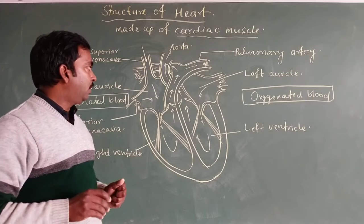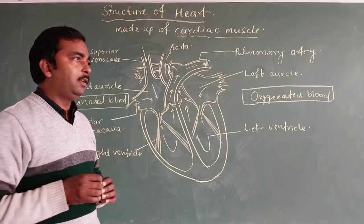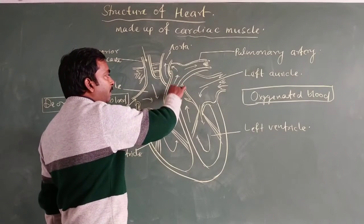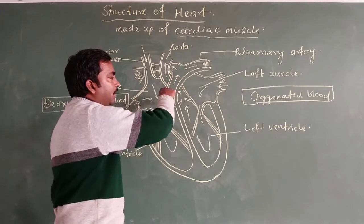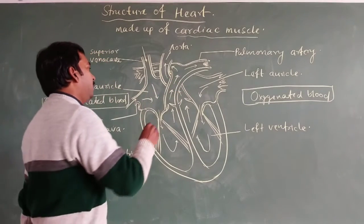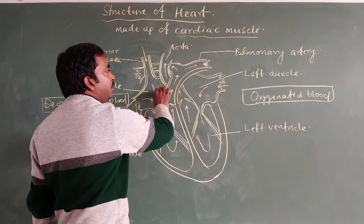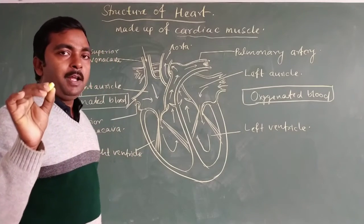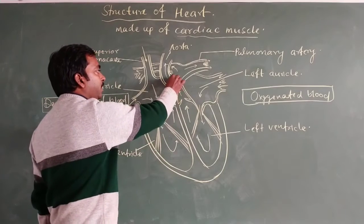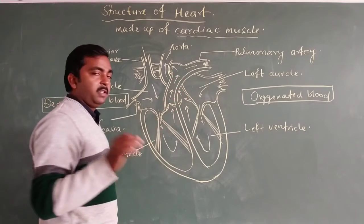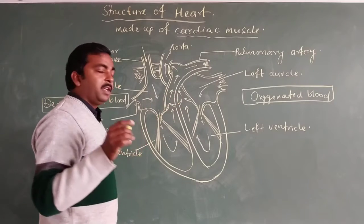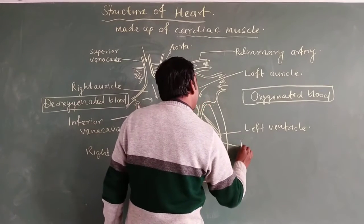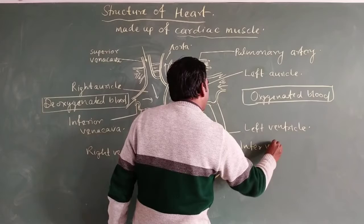The wall that separates the two sides is known as the septum. Between the two auricles there is a septum known as the inter-auricular septum. We have also discussed the inter-ventricular septum, which separates the two ventricles.